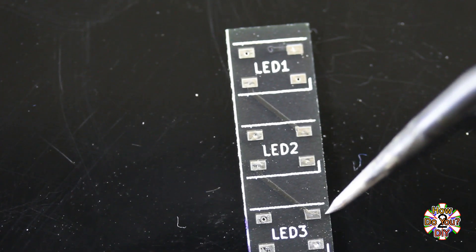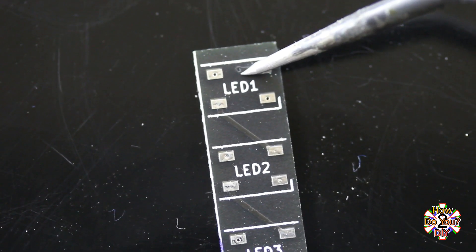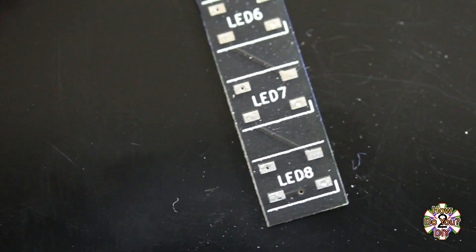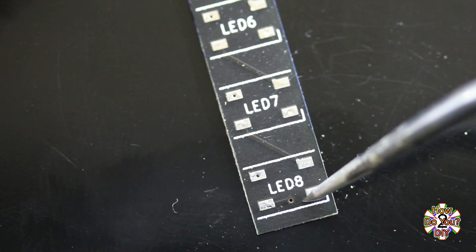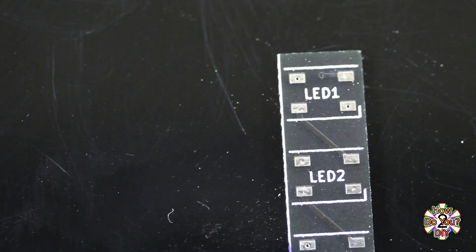At the top of the strip in the middle is a via with a trace going to the first LED data input. At the bottom in the middle is a via that goes to the last LED data output. All of the vias are positioned to be hidden by the LEDs, although this isn't actually necessary.